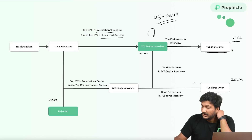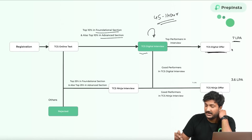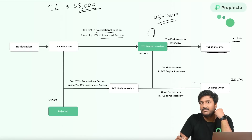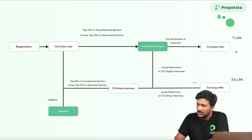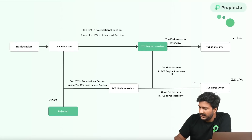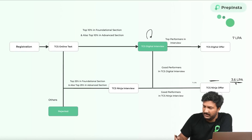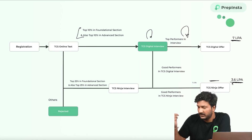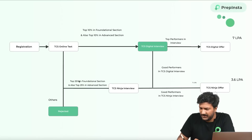That interview will have three outcomes. The best performers will get directly a TCS Digital offer at 7 LPA. Good performers will get a Ninja offer at 3.6 LPA. Note that this year TCS is hiring fewer people — last year they hired one lakh people, this year they're hiring approximately 40,000 due to recession — so being in the top 10% and doing very well in the interview gives you the 7 LPA offer.